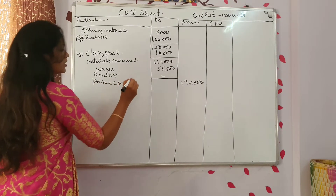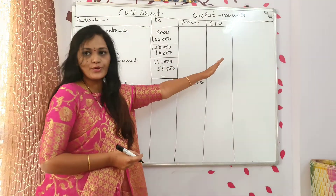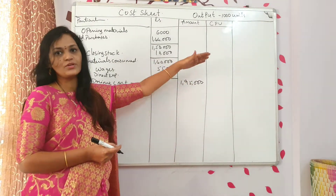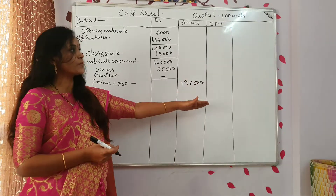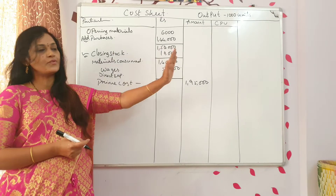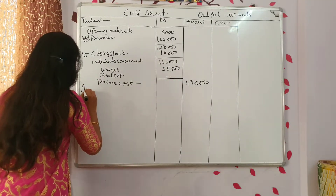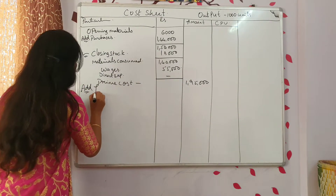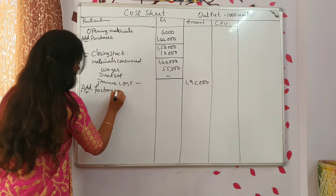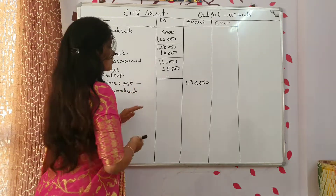This is called prime cost. You can do immediately what is the cost per unit, or first complete the total cost sheet and then find out what is the cost per each unit. I want to first finish it off totally and then move on to the cost per unit. To this, add factory overheads. Is there any factory overheads? Factory overheads for the month: 60,000.